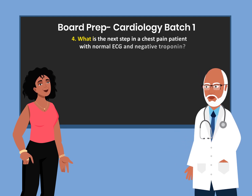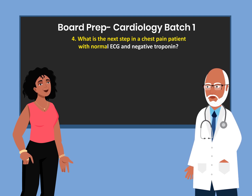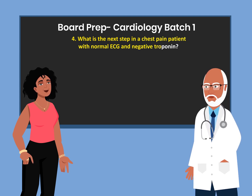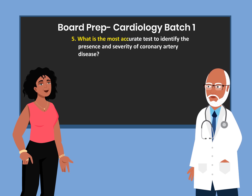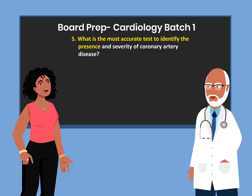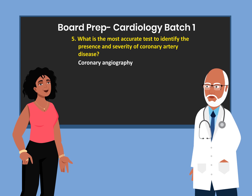What is the next step in a chest pain patient with normal ECG and negative troponin? Stress test. What is the most accurate test to identify the presence and severity of coronary artery disease? Coronary angiography.